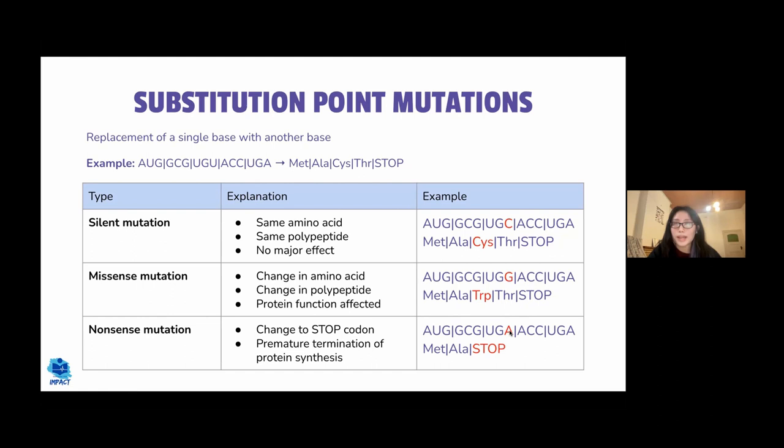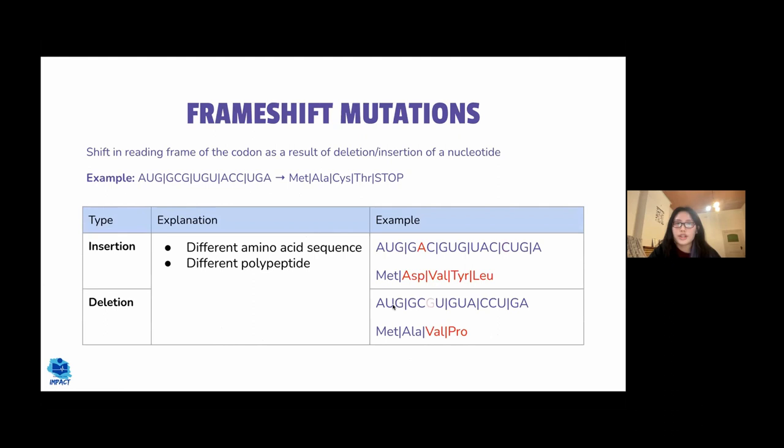In nonsense mutations, the change in the base results in a premature stop codon. This causes premature termination of protein synthesis, producing a protein that is shorter than normal.